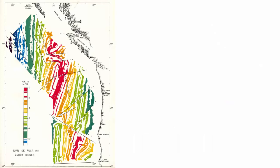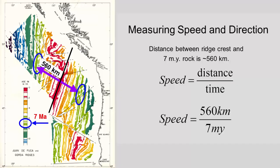So, back to measuring speed and direction. Let's use this normal polarity reading that represents 7 million year old rock. Where was this rock when it formed? Here at the spreading center. So, what's the direction of plate motion? Away. And how fast on average has it been spreading? If 560 kilometers separates the rock from its origin, then it has traveled 560 kilometers in 7 million years.